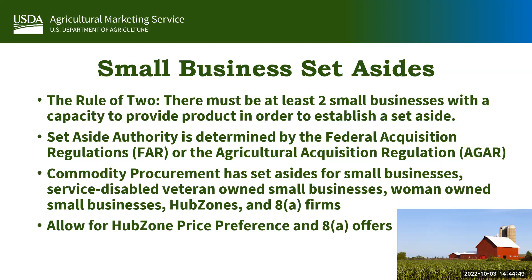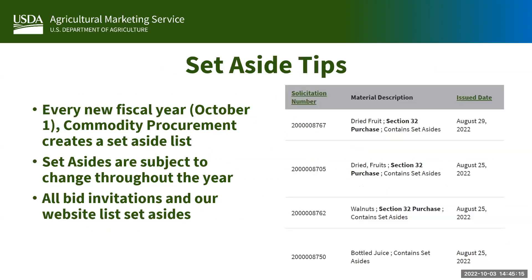HUBZones and 8(a) firms are a little different in that we don't need to have two HUBZones or two 8(a)s to provide assistance to vendors. Single HUBZones can compete for a contract and receive what's called HUBZone price preference. On October 1st, the start of every fiscal year, commodity procurement establishes a set-aside list for all of our commodities. Set-asides are subject to change throughout the year, and while we don't keep a regularly available list on our website, they are listed in the bid invitation.